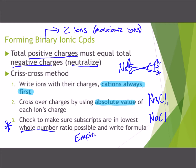In our next unit on the mole, we'll talk more about empirical formulas, but for now just make sure with ionic compounds we write them in the lowest ratio. Remember, these rules are for ionic compounds only — covalent compounds have their own set, which we'll get to next week.